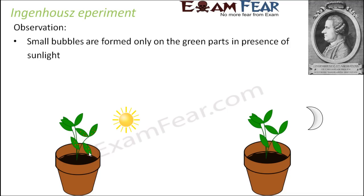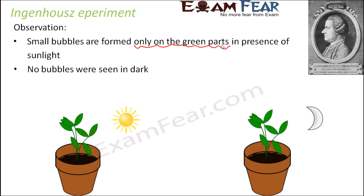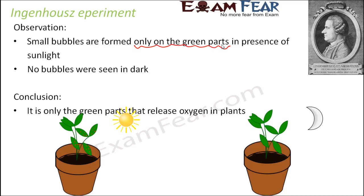These bubbles were not formed in the dark — when there was no sunlight, there were no bubbles. The bubbles appeared only on the green parts, not everywhere. For example, they were not present on the roots, only on the leaves and other green parts like the green portions of the stem. He did further research and found that those bubbles were nothing but oxygen. His conclusion was that only the green parts of plants release oxygen, and that oxygen is released only in the presence of sunlight.